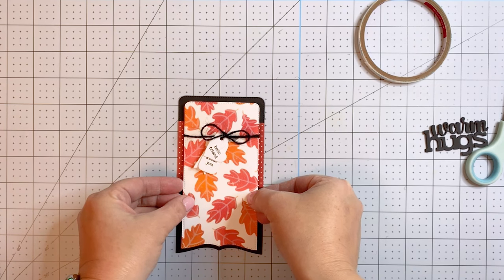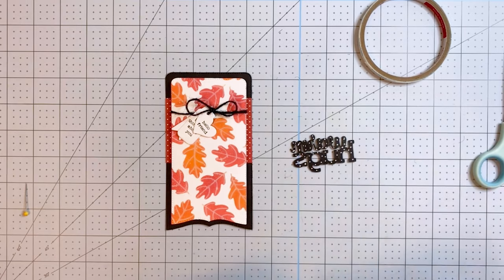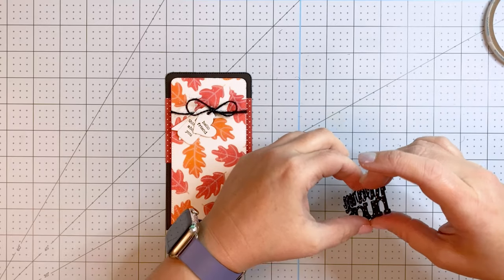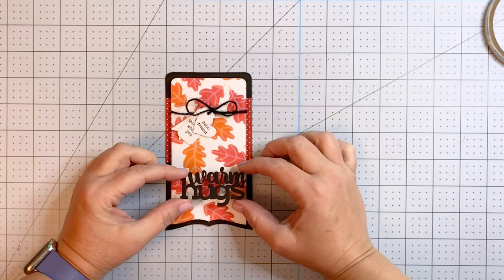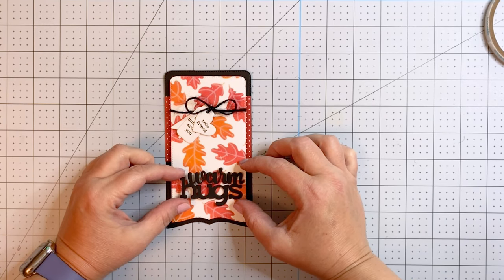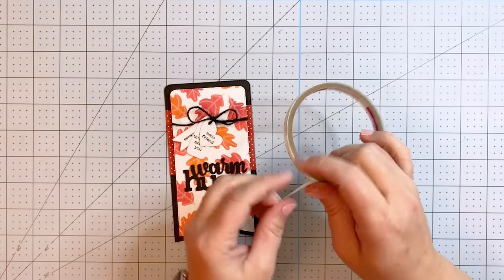So I am getting everything nice and lined up on top there, and now I can add my warm hugs sentiment. So pretty. And get this down on the card. I'm doing it kind of towards the middle. At first I thought I was going to do it towards the bottom, but then I decided that I thought it looked better closer up by that bow, so I moved it up just slightly and I'm going to get it nice and straight on there.